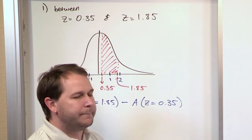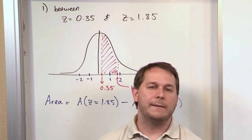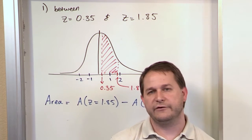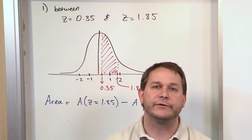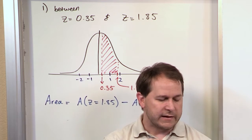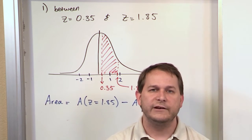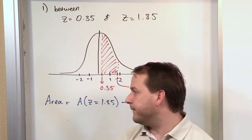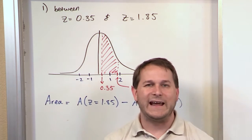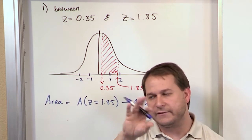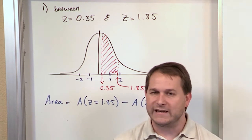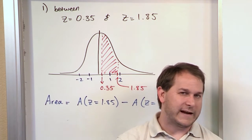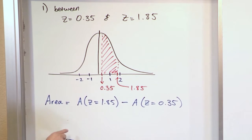At this point, since I covered the last section on how to use the table, I'm going to assume you know how to use the z-chart table. I'm not going to show you every single lookup. You should know from the last section how to look up 1.85 and get the answer out of the chart — same thing with negative values. If you don't, go back to the last section and review it.